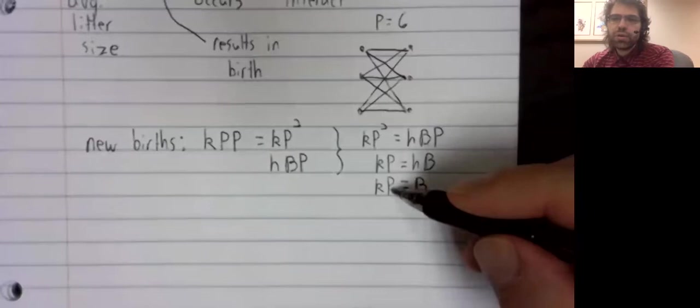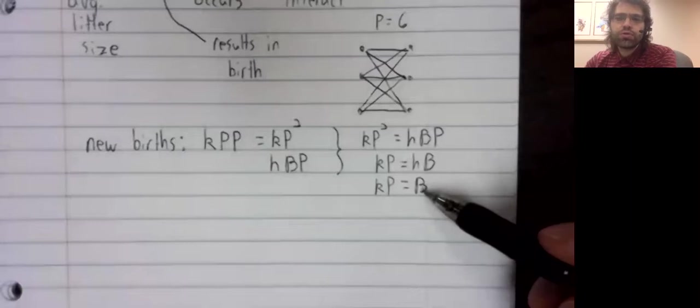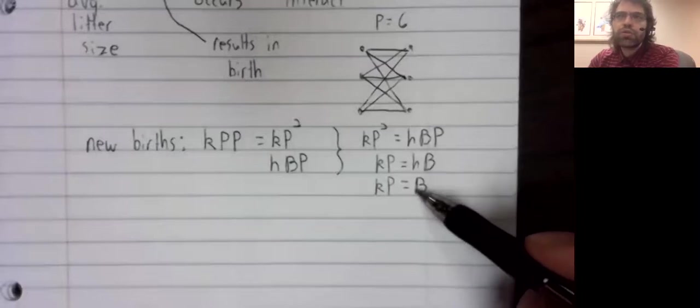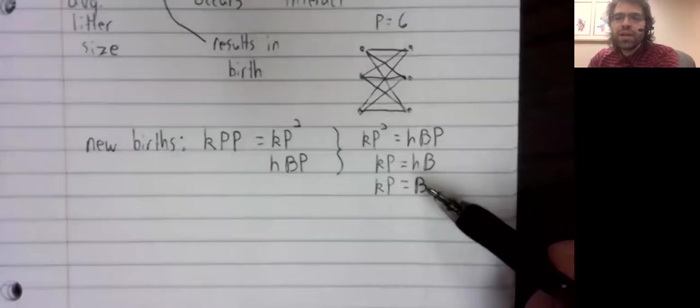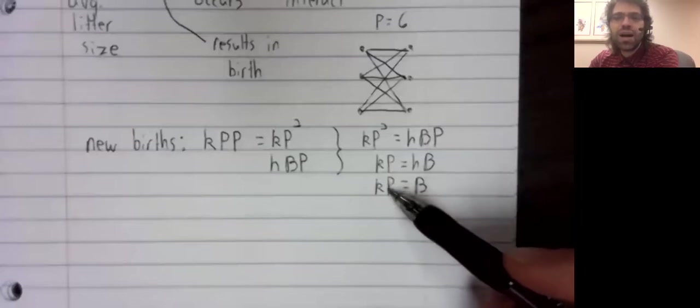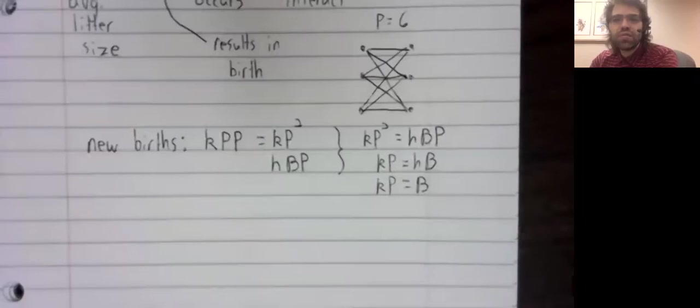P, remember, is a function of time. So when we introduced birth rate, and we've seen this before with the logistic model, when we introduced birth rate, it was as a function of time. If the birth rate is a function of population and population is a function of time, then the birth rate is a function of time by composition.